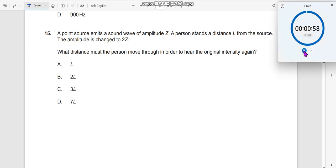Question number 15. A point source emits a sound wave of amplitude Z. A person stands at distance L from the source. The amplitude is changed to 2Z.